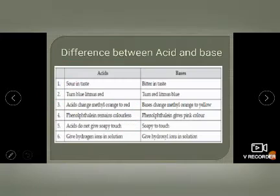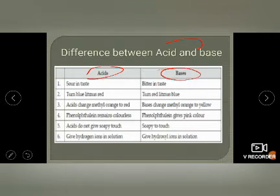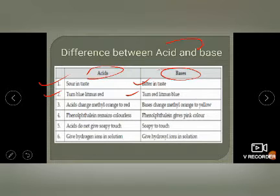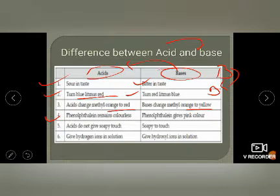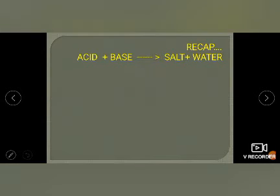We have already discussed how acid is different from base. Acids are sour in taste; bases are bitter in taste. On the basis of indicators: acid turns blue litmus into red, whereas base turns red litmus into blue. Remember: B for base, B for blue. Methyl orange turns red in acid and yellow in base. Phenolphthalein remains colorless in acid and gives pink color in base. Acid does not give soapy touch whereas base does. Acid gives hydrogen ion on dissociation whereas base gives hydroxide ion.